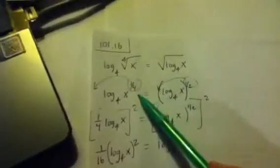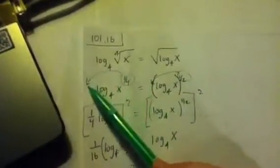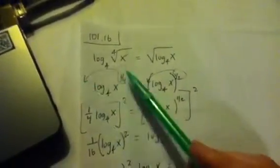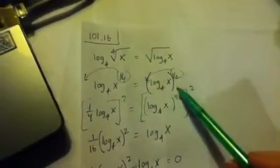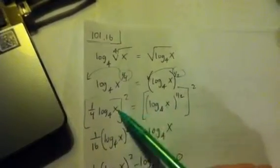And then if you write this one like this, you can bring the one fourth out front using that log law about the exponents. Then I want to get rid of this half, so I square both sides.